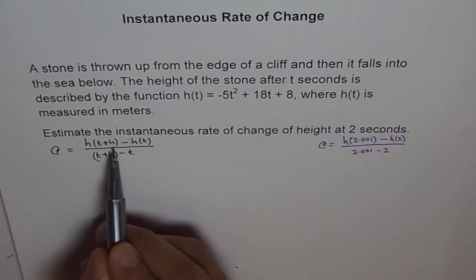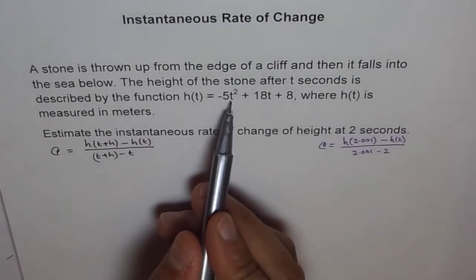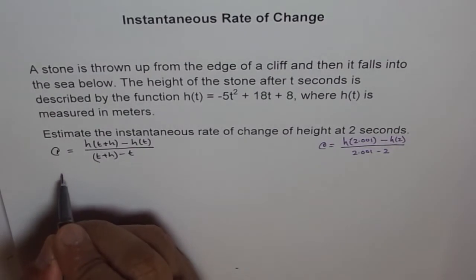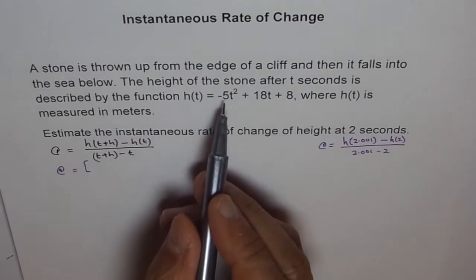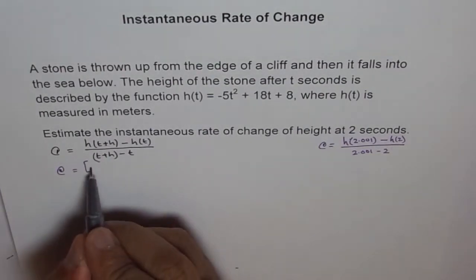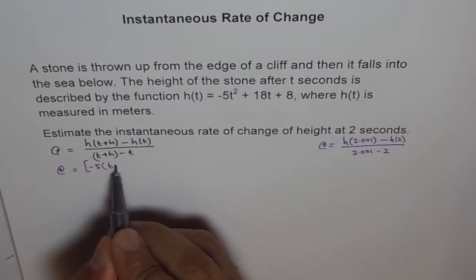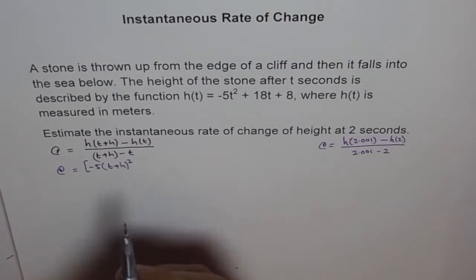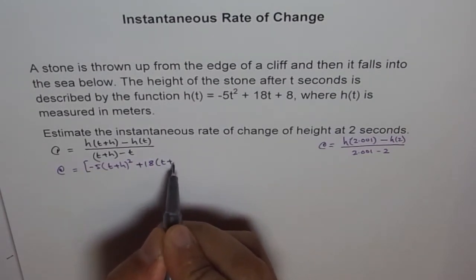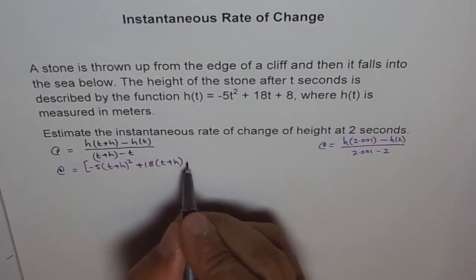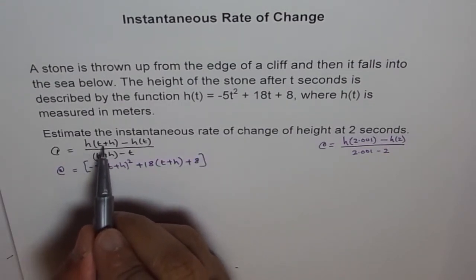Now, let us do it. So, what is h(t+h)? So, h(t+h) will be that I need to replace this t with t+h. So, we say, rate of change will be, first term I am writing -5 and instead of t, I am writing t+h, so, (t+h)² and then we have +18 and then it is (t+h) plus 8. So, this is my term which corresponds to h(t+h).